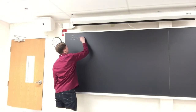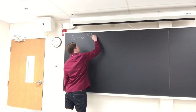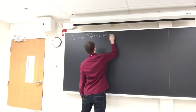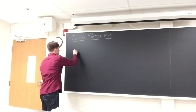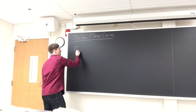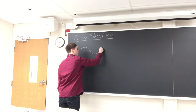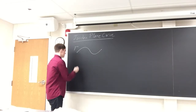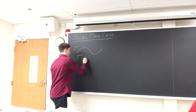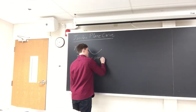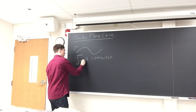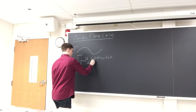So when we have the Jordan Plane Curve Theorem, we have two versions of this really. First, if we just have a curve gamma in the complex plane — just a simple curve that doesn't intersect itself — the theorem says that the complement of gamma is connected, and the boundary of the complement of gamma is exactly gamma.